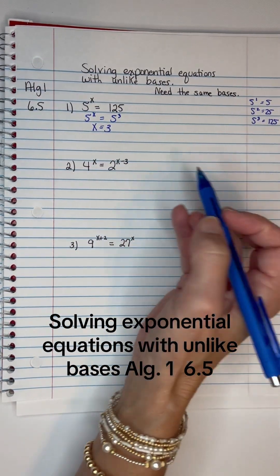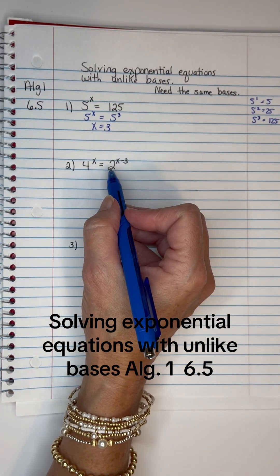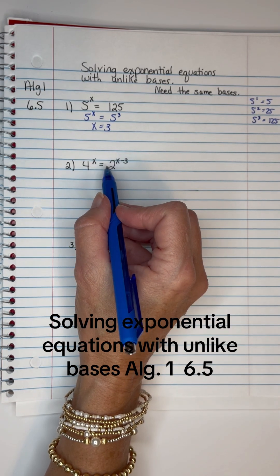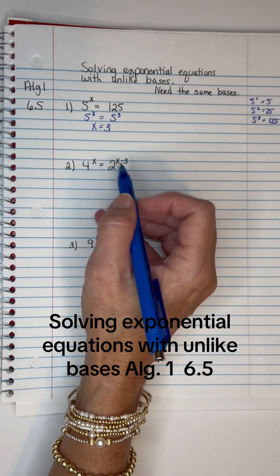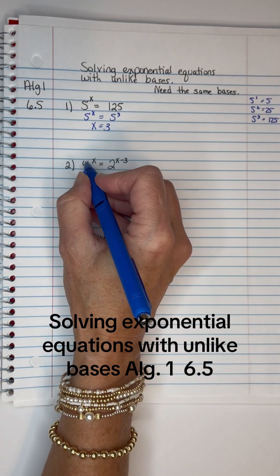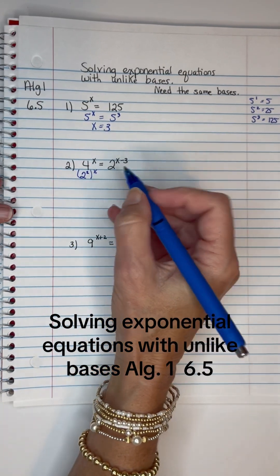We found it. Now on this one right here, I've got a 4 and a 2, and those are not the same base. I need to change this 4 into a 2, and that's pretty easy because 4 is 2 squared. So I can change the 4 to 2 squared, and then that's raised to the X.